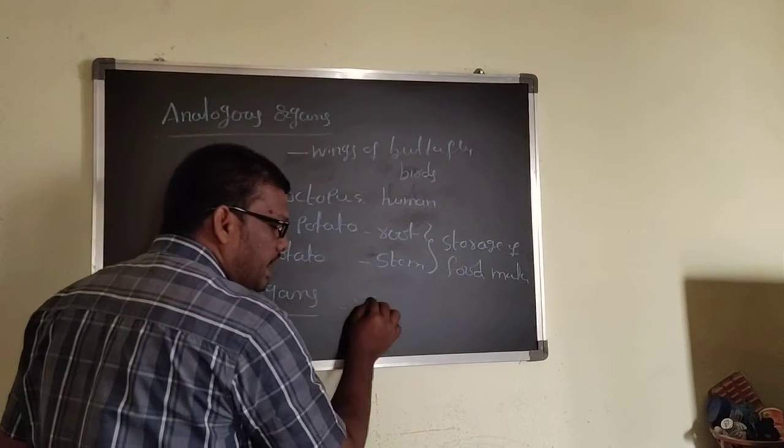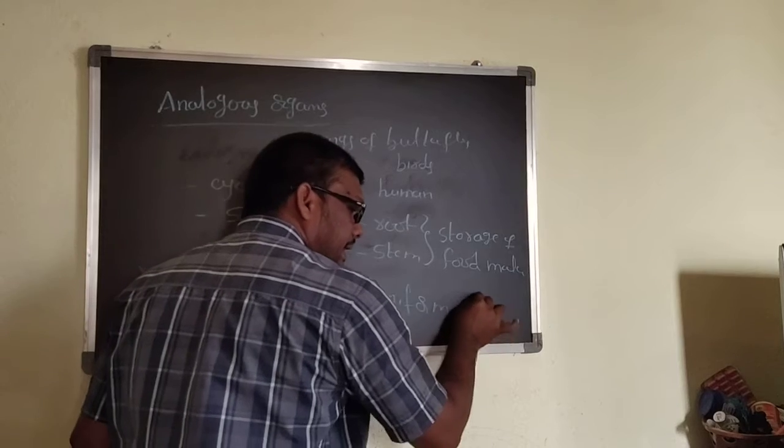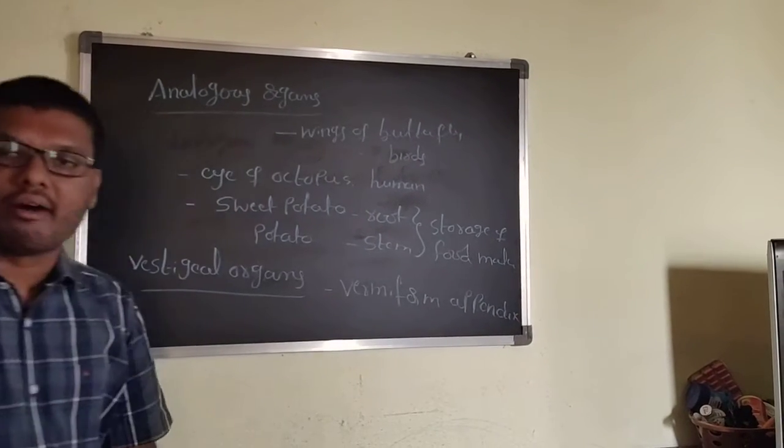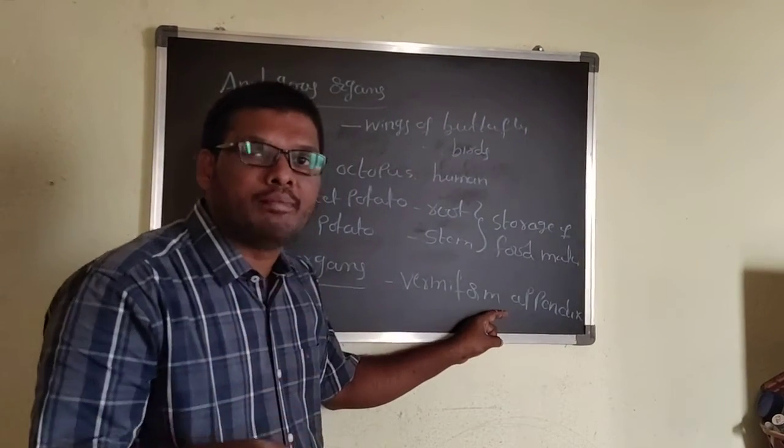Suppose we can go for in our body, vermiform appendix. In previous ancestors, from there it could produce an enzyme cellulase.